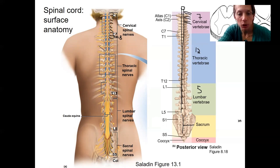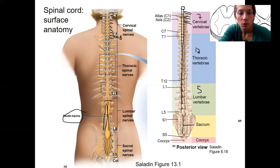Note the anatomy below the thoracic level. There's this cauda equina, which refers to horse's tail, and it is this anatomy right here that looks like a horse's tail, where the spinal nerves travel straight down and then out.